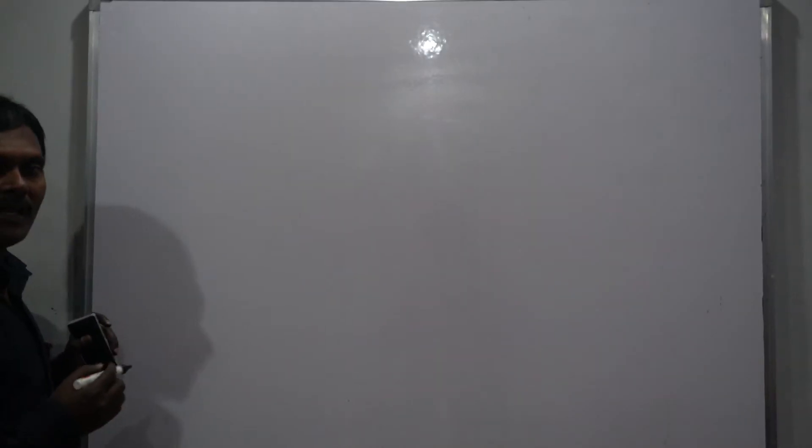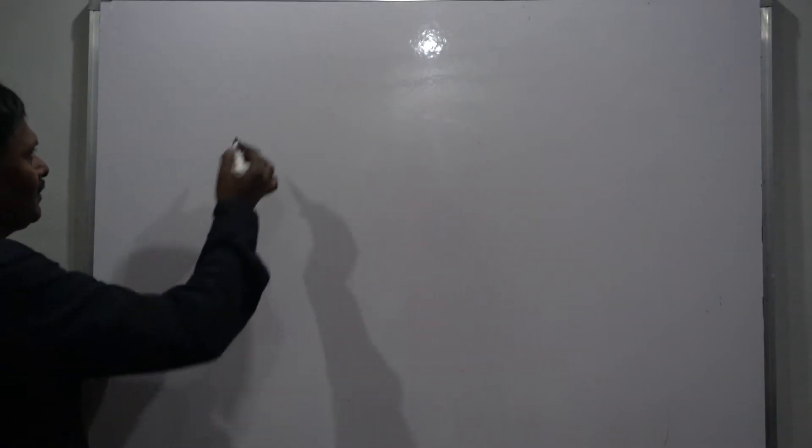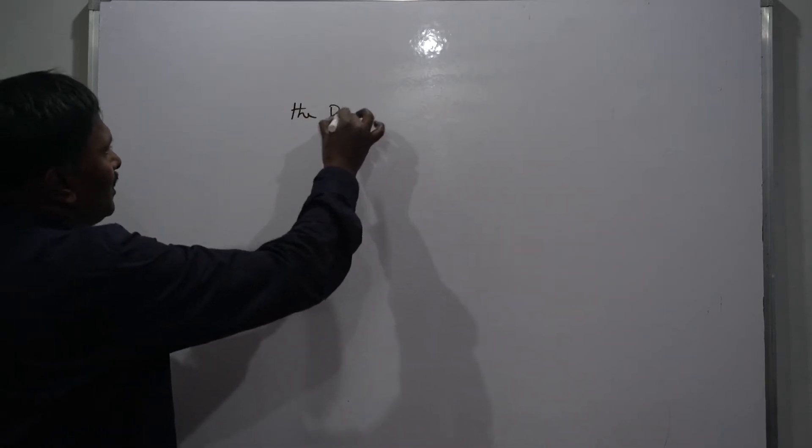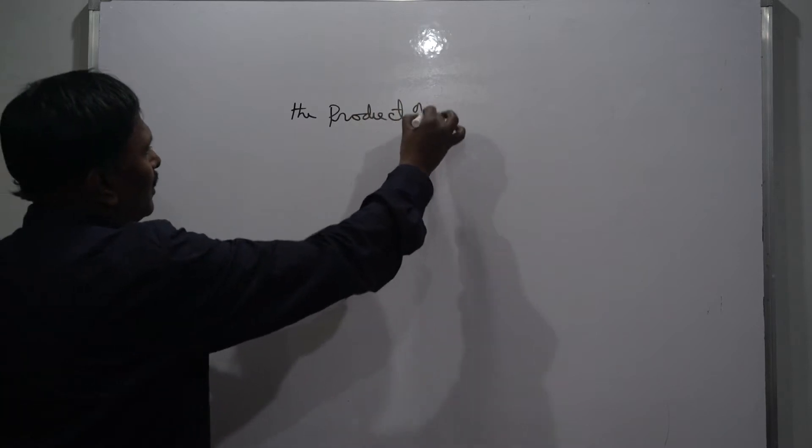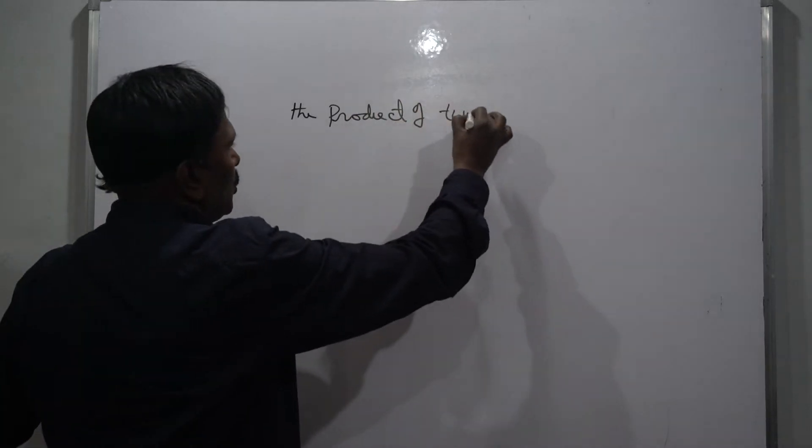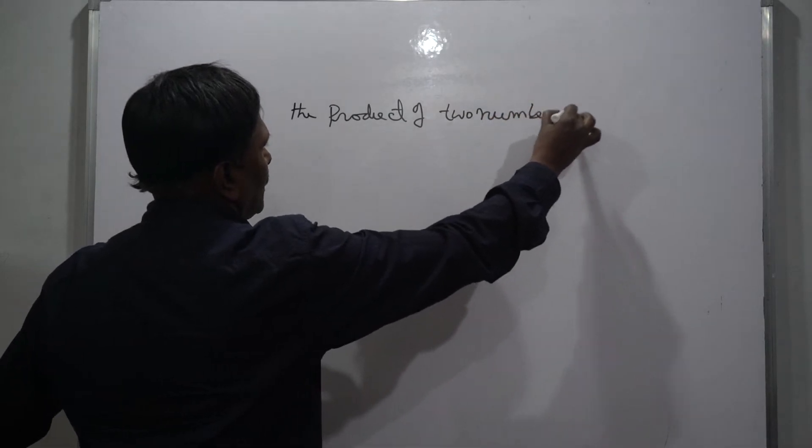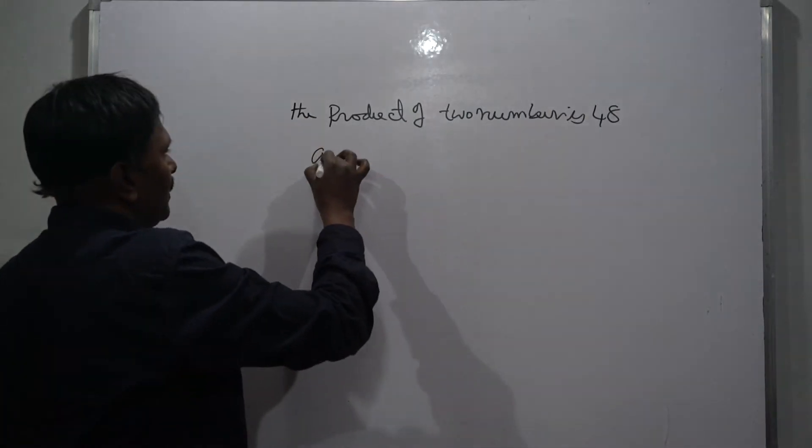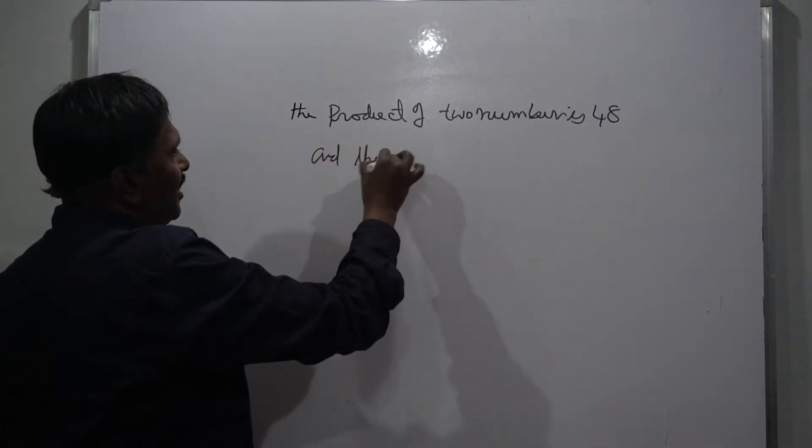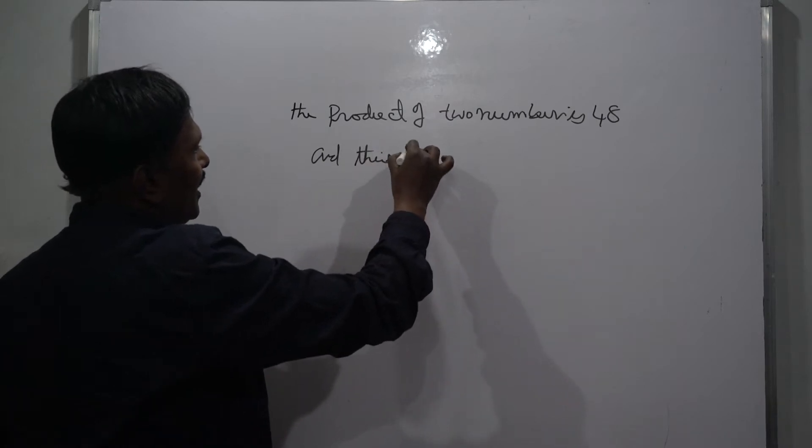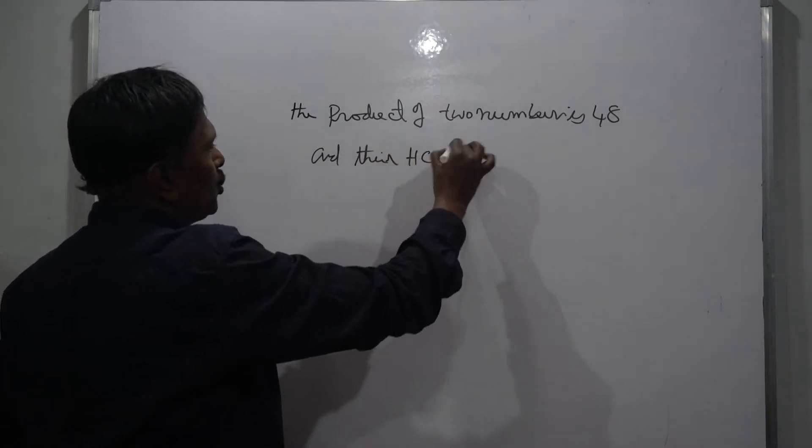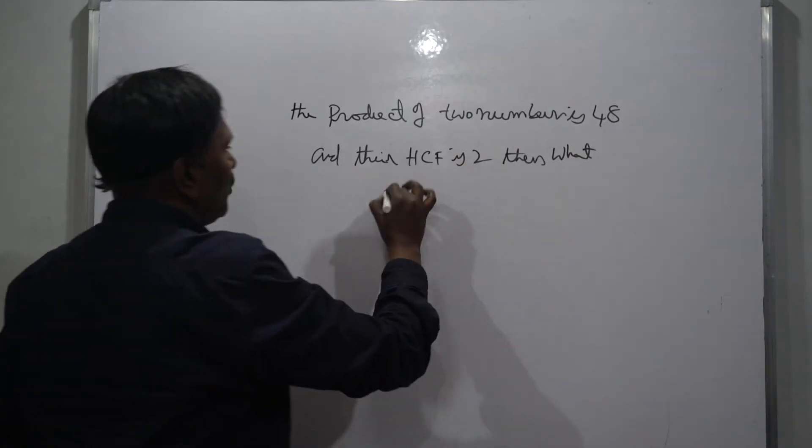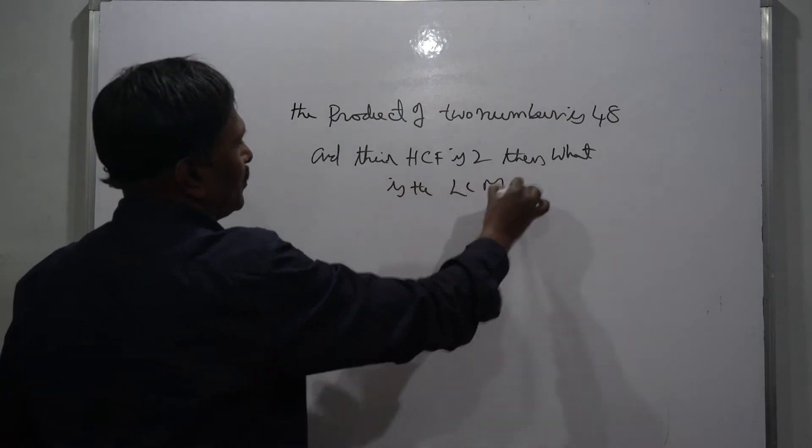Hi, welcome to our channel, A Learning Group. This is Srinivas. The product of two numbers is 48 and their HCF is 2. Then what is the LCM?